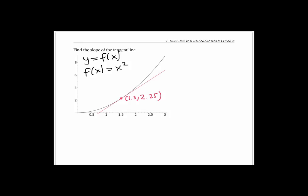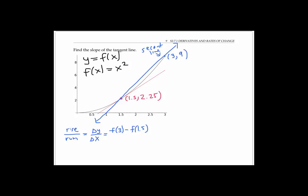So what we're going to do instead is calculate the slope of a secant line. A secant line is a line that goes through two points on my graph. In this case, my secant line goes through my original point and this other point at x equals three. To calculate the slope of my secant line, I use rise over run — the change in y over the change in x. That's f of three minus f of 1.5 over three minus 1.5. Since f of x is x squared, that's three squared minus 1.5 squared over three minus 1.5, which is nine minus 2.25 over 1.5, giving us 4.5.